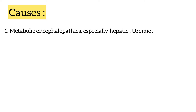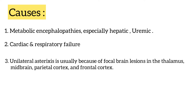What are the causes? Metabolic encephalopathy, especially hepatic and uremic encephalopathy. Cardiac and respiratory failure. Unilateral asterixis is usually due to focal brain lesions in the thalamus, midbrain, parietal cortex, and frontal cortex.